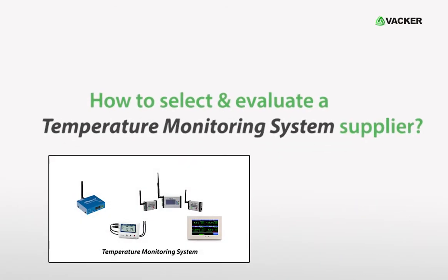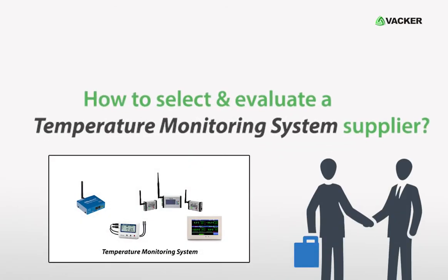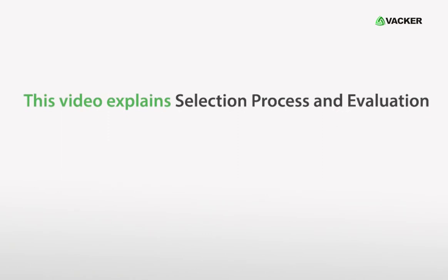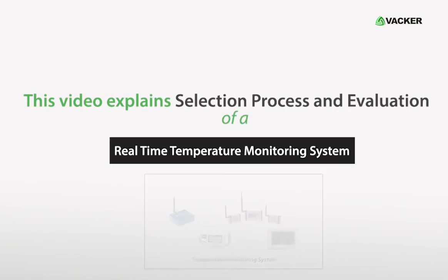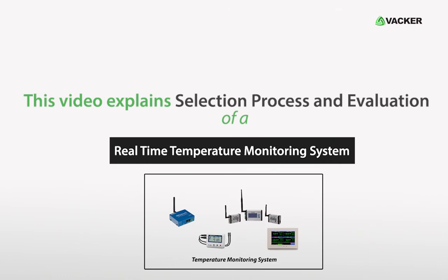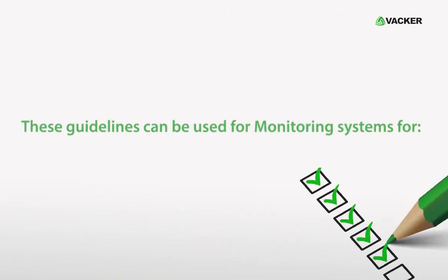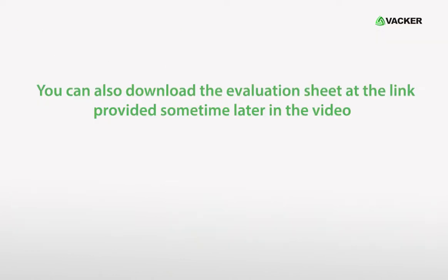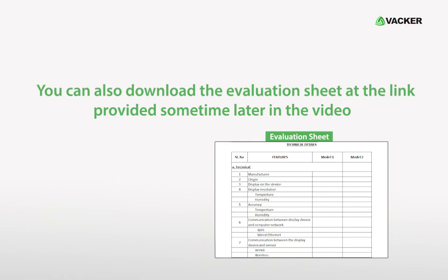How to Select and Evaluate a Temperature Monitoring System Supplier. This video explains the selection process and evaluation of a real-time temperature monitoring system. These guidelines can be used for monitoring systems for medicines, refrigerators, research labs, fruits and vegetable storage, food processing, industrial systems, etc. You can also download the evaluation sheet at the link provided later in the video.